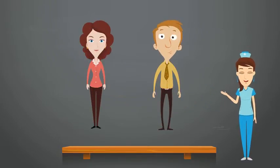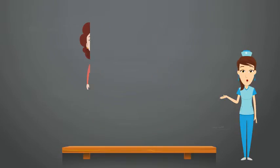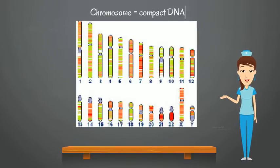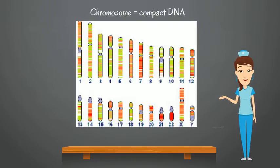You inherit DNA from your parents. Your mom and dad both give you 23 chromosomes. This is a fancy word for compact DNA. Two of these chromosomes determine whether you're a boy or a girl.